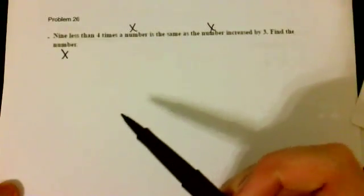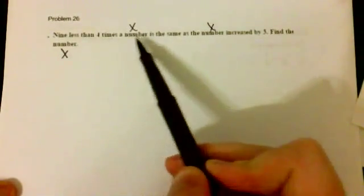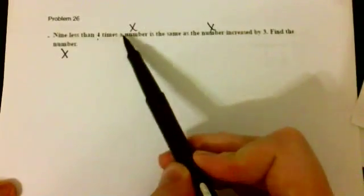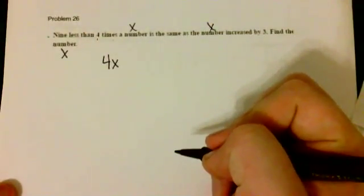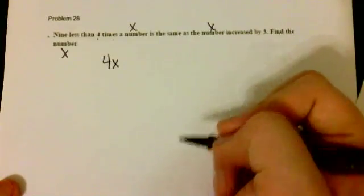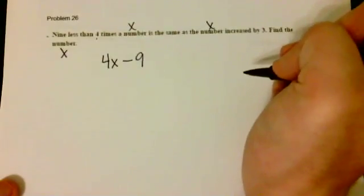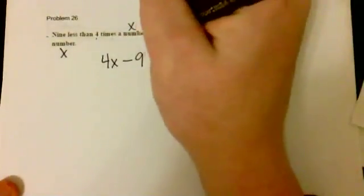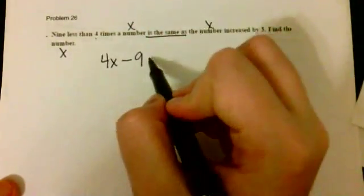So nine less than four times a number - four times X is 4X, and we need nine less than 4X, so we're going to subtract nine. This part of the equation 'is the same as' - when we see the words 'is the same as,' this tells us that we need to put an equal sign.